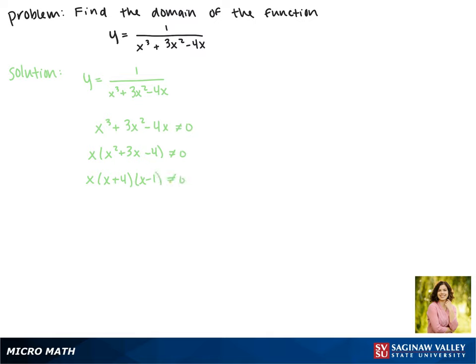So now each of these products we're going to take turns setting not equal to 0. So we know that x is not equal to 0 and x plus 4 is not equal to 0 and x minus 1 is not equal to 0.